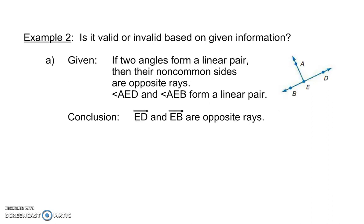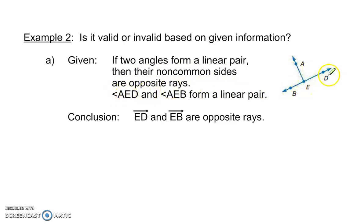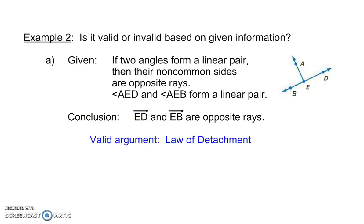Is it valid or invalid based on the given information? We are given: if two angles form a linear pair, then their non-common sides are opposite rays. Angle AED and angle AEB form a linear pair. Our conclusion is that ED and EB are opposite rays. This is a valid argument based on the law of detachment.